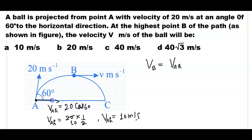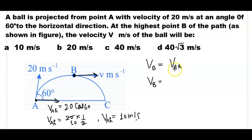The horizontal component of velocity does not change during projectile motion. At point B, the vertical component of velocity is equal to zero because point B is at the highest point. The horizontal component of velocity at point B is 10 meters per second, so the velocity at point B is 10 meters per second.